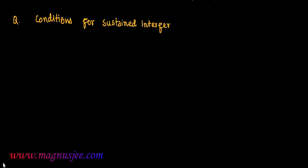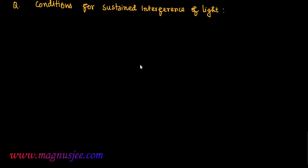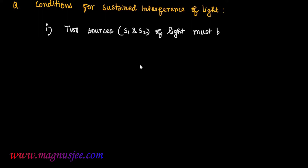Conditions for sustained interference of light. Number one condition: two sources of light S1 and S2 must be coherent. If S1 and S2 are sources of light, then they should be coherent.